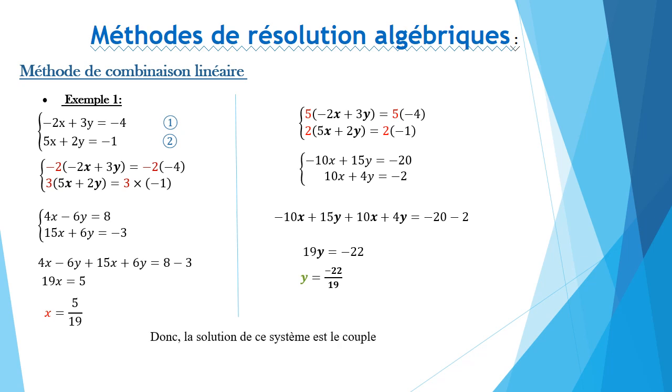Alors, la solution de ce système est le couple 5 sur 19 et moins 22 sur 19.